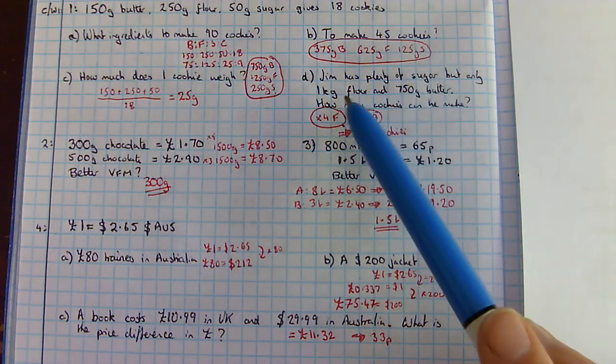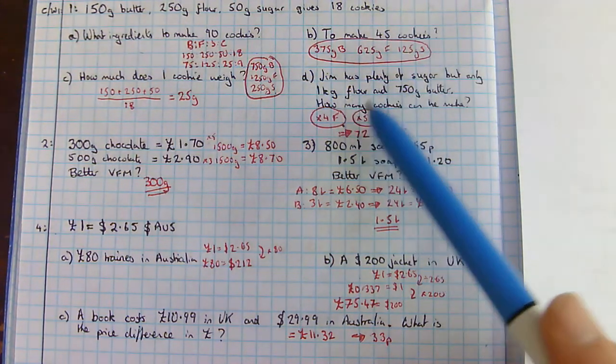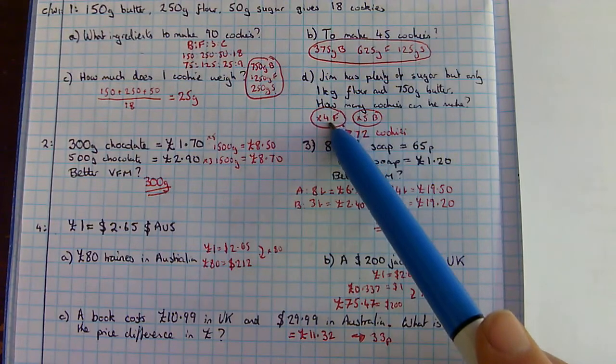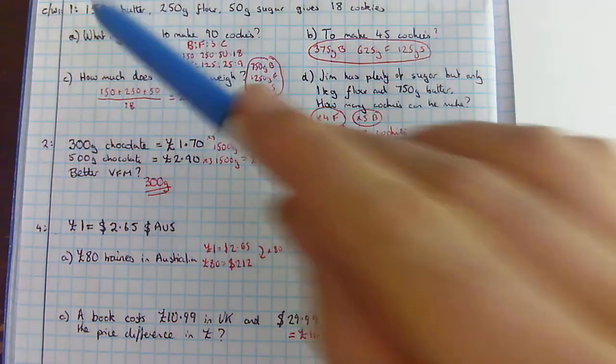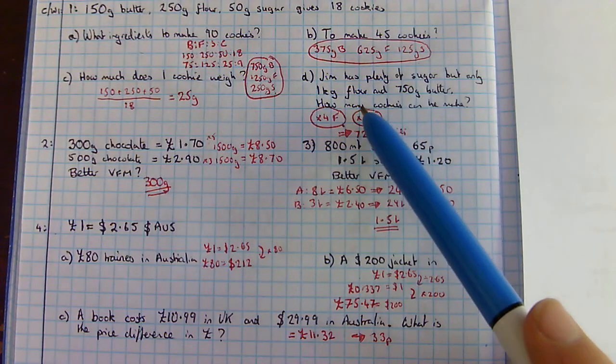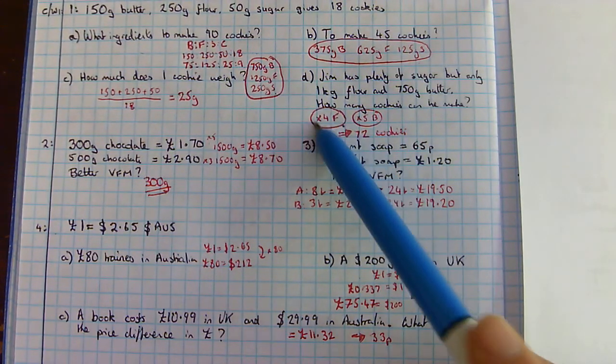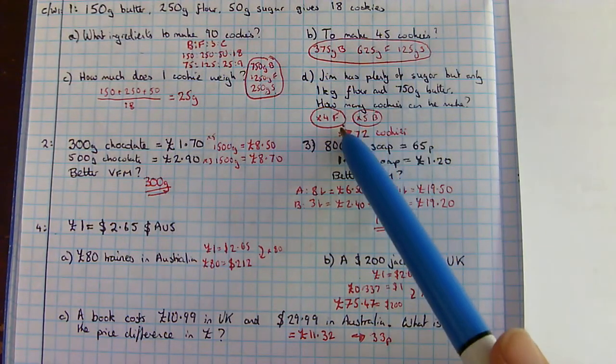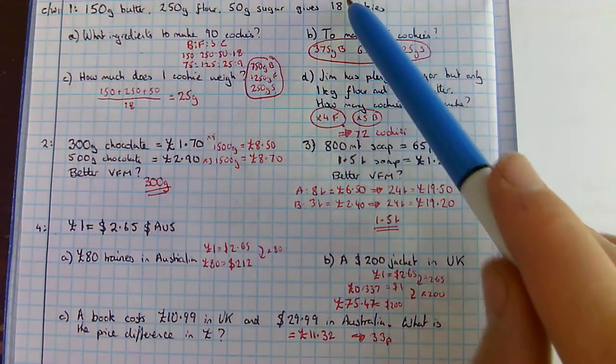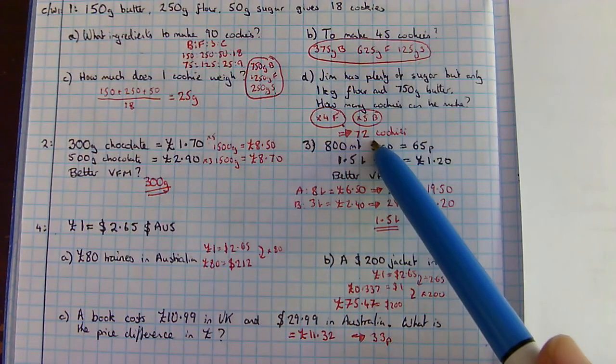Part D. We've got 1 kilogram of flour, which is 4 lots of this quantity. We've got 750 grams of butter, which is 5 lots of this quantity. So, the flour means that we can only make 4 times the quantities of the recipes. Timesing everything by 4, 18 times 4 told me that it was 72 cookies.